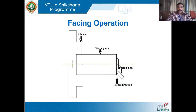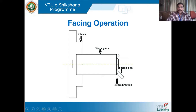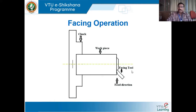Facing operation is not only performed to get flat surfaces, but also for producing shouldering operations. In facing operation, depth of cut is given by moving the facing tool parallel to the axis of the lathe. Once the desired depth of cut is achieved, the entire carriage is locked at that position. Feed is then accomplished by rotating the cross slide wheel, moving the tool perpendicular to the lathe axis.